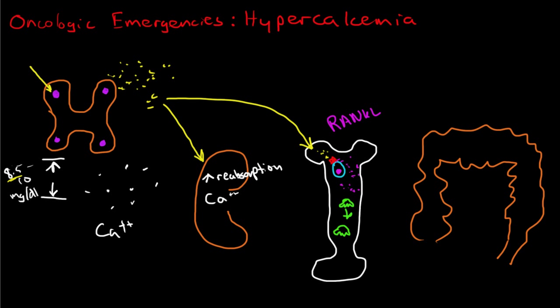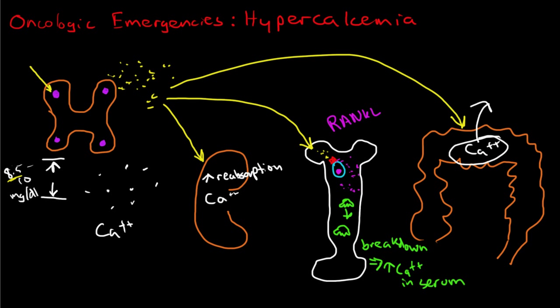What do osteoclasts do? They begin to break down bone tissue, and that causes a release of stored calcium in the bone to be released into the bloodstream, increasing calcium in the bloodstream. The third thing parathyroid hormone does is it stimulates the gut to increase absorption of calcium.